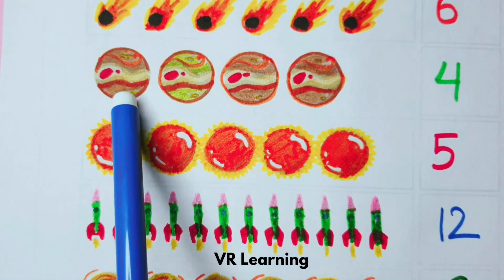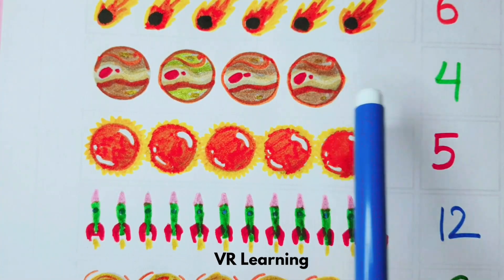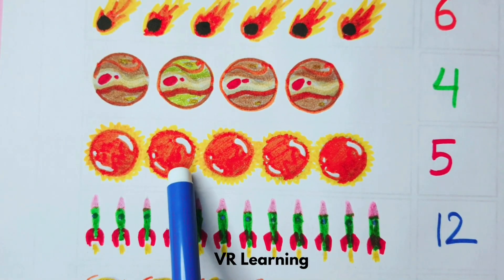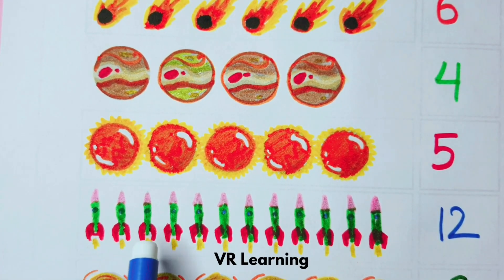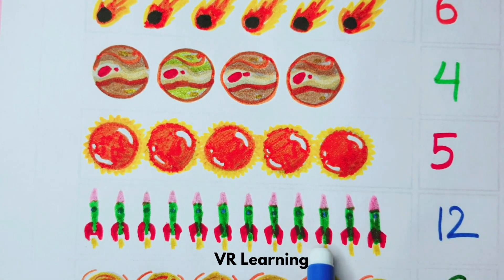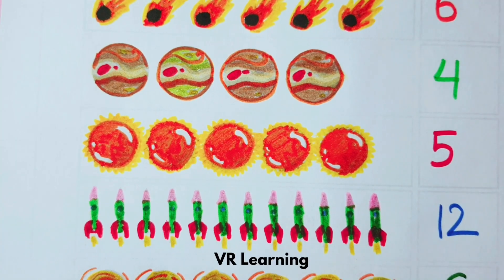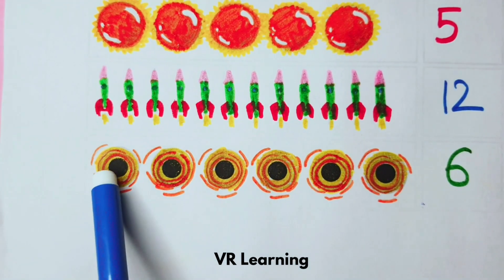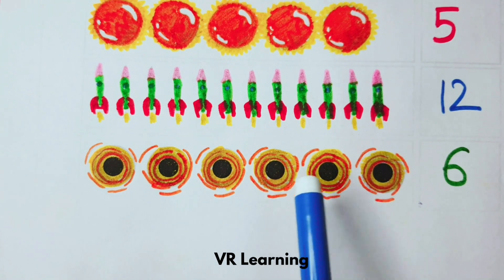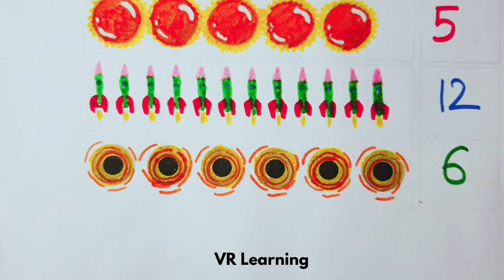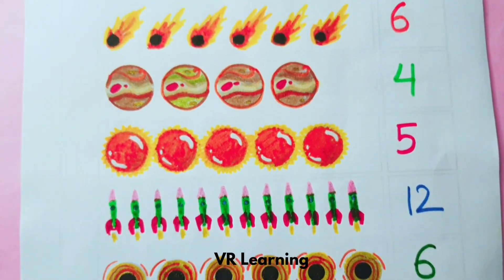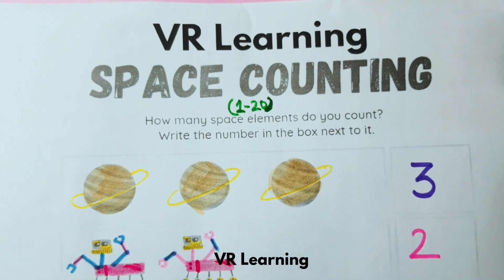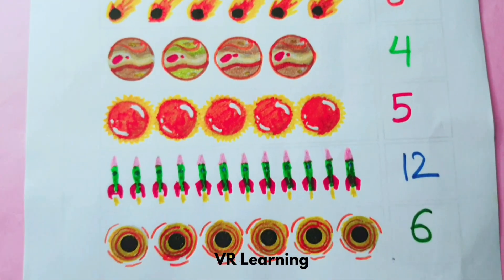One, two, three, four — four. One, two, three, four, five — five. One, two, three, four, five, six, seven, eight, nine, ten, eleven, twelve. One, two, three, four, five, six — six. One, two, three, four, five, six — six.